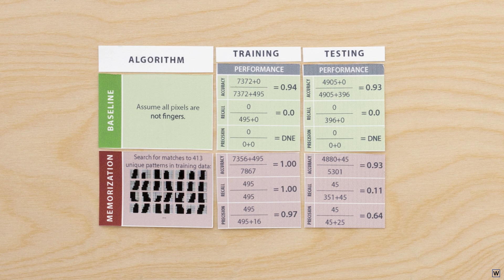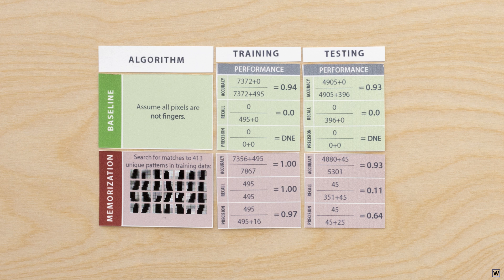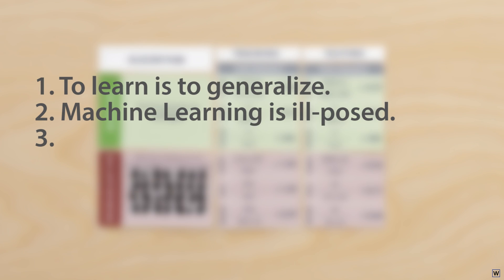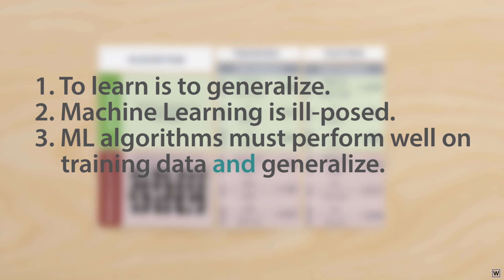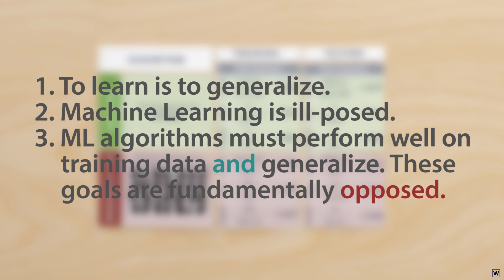Whatever strategy we adopt next, we would really like it to do both. We want good performance on our training data, and of course, it must generalize. This brings us to our third big point. There are not one, but two goals when learning from data. Training set performance and generalization. And more importantly, these goals are fundamentally opposed.